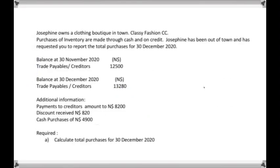In this lesson I will show you how to calculate total purchases for 30 December 2020 when you have incomplete information. When they give you information but do not give you the required information and you have to calculate something yourself. Josephine owns a clothing boutique called Classy Fashion CC. Purchases of inventory are made through cash and on credit, and Josephine has requested you to report the total purchases for the 30th of December 2020.